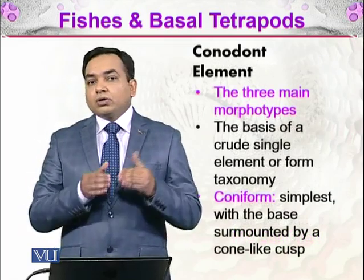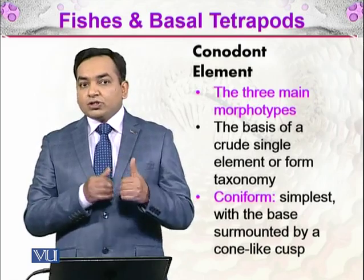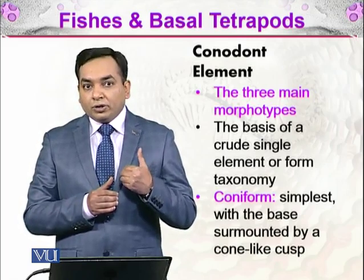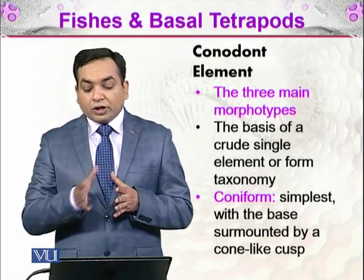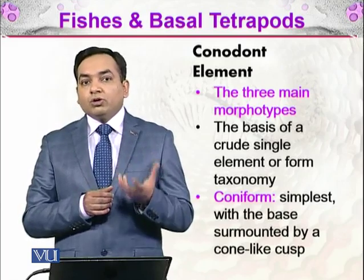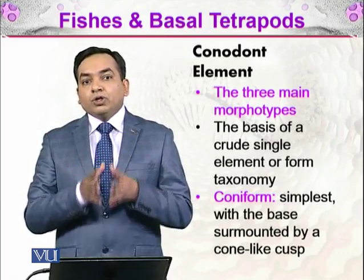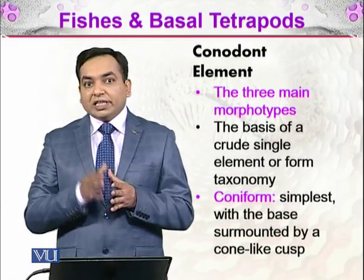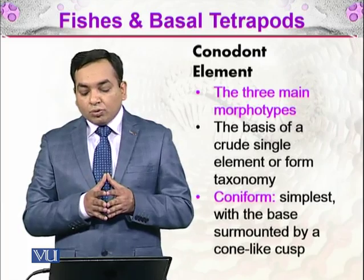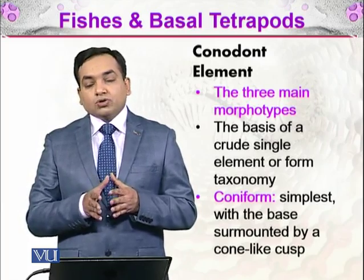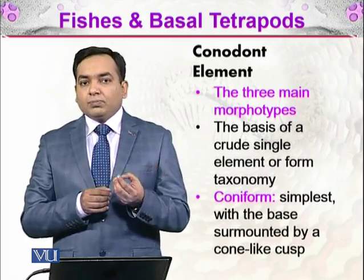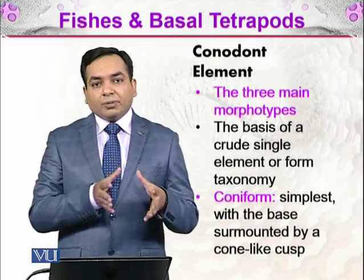What are the conodont elements? Conodont elements are divided into three groups based on their structures — three main morphotypes. 'Morpho' refers to how they look, and 'type' refers to their type. On the basis of their morphology they have been divided into three main types, using the crude single element form for taxonomy.